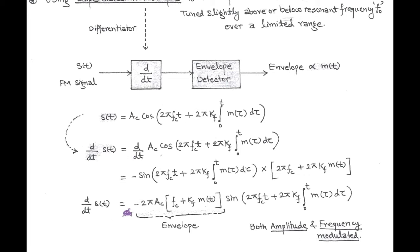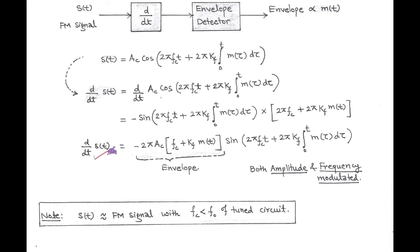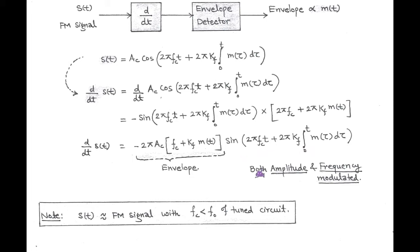Now, after arrangement, we get d/dT of S(T) = −2π·AC·(FC + KF·m(T)) × sin(2π·FC·T + 2π·KF·∫m(τ)dτ). Here the first expression is called the envelope, which represents amplitude modulation, and the second represents frequency modulation. So here we have both amplitude and frequency modulated terms in the output of the differentiator.